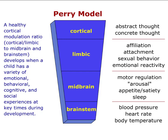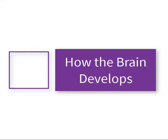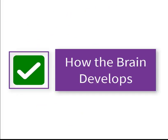The Perry model states that a healthy cortical modulation ratio develops when a child has a variety of emotional, behavioral, cognitive, and social experiences at key times during development. You have completed this activity on how the brain develops.